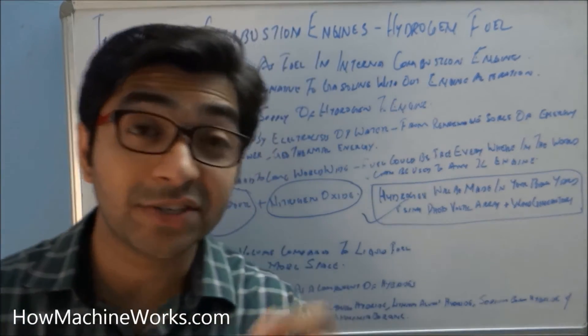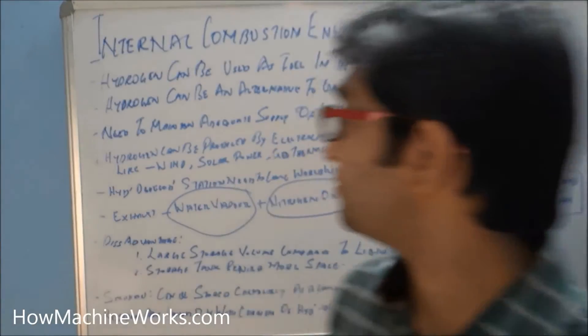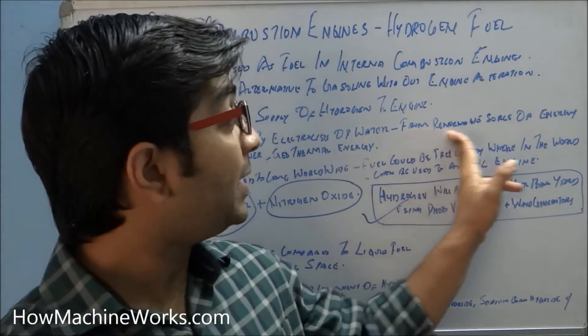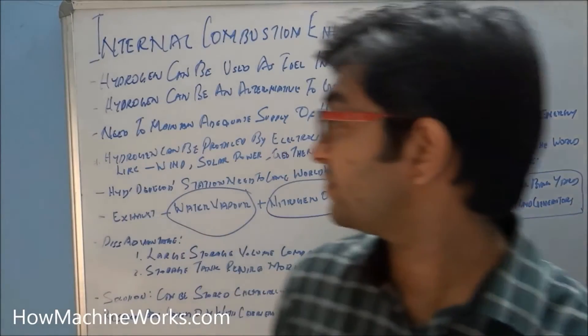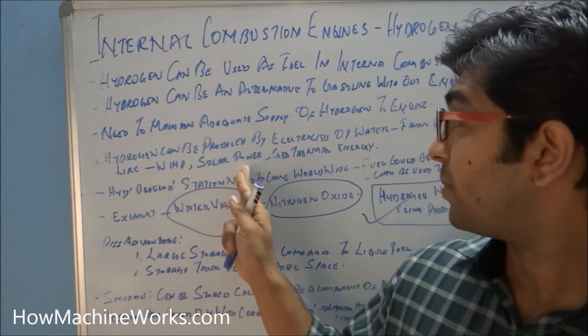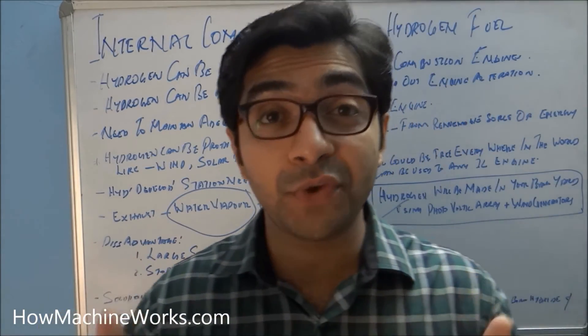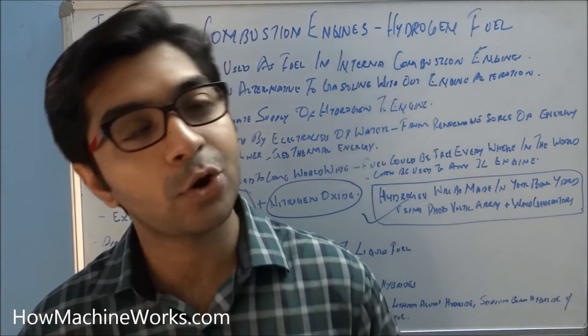So how can hydrogen be produced? Hydrogen can be produced by the electrolysis of water and also from many other renewable sources of energy, which are like the wind, the solar power, the geothermal energy, etc. So it's a free source of fuel for your engines and your automobiles.